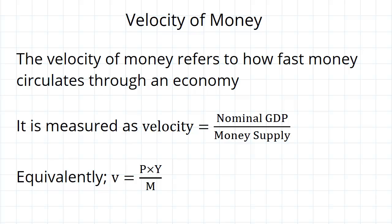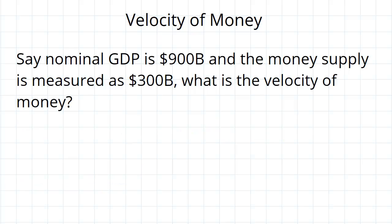Now I think to understand what velocity of money is, it's best to go straight into an example. So let's say that the nominal GDP is 900 billion dollars and the money supply is measured as 300 billion dollars. What is the velocity of money?